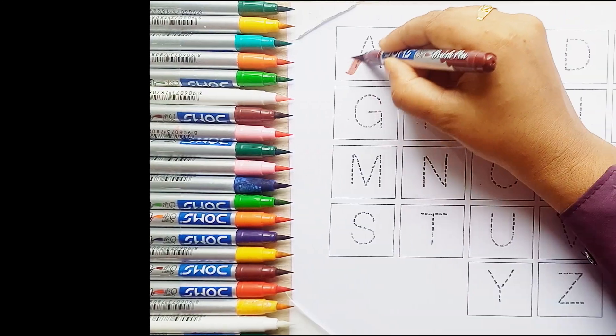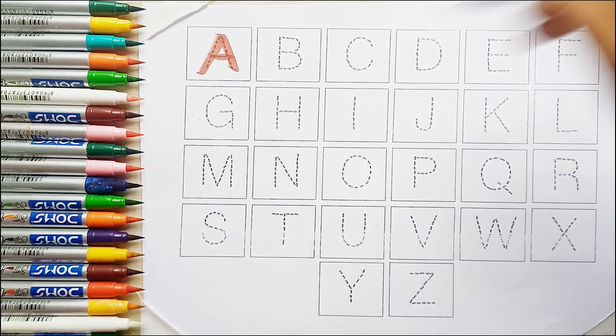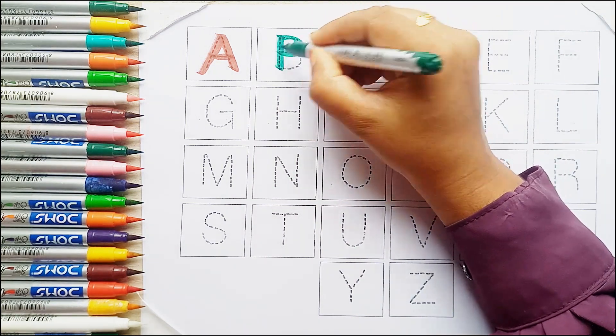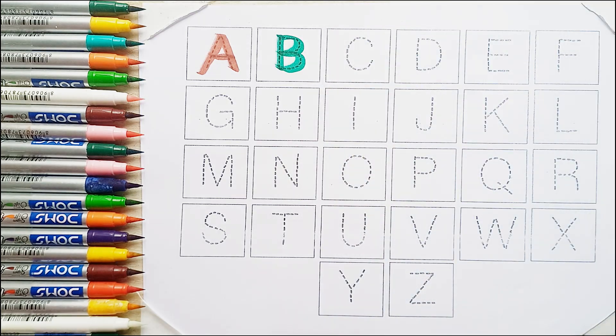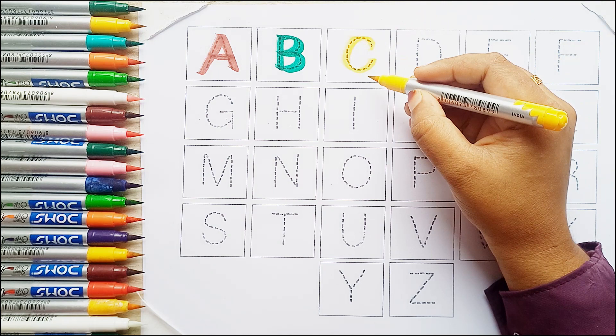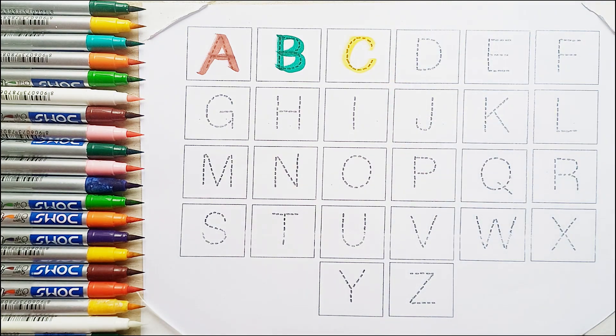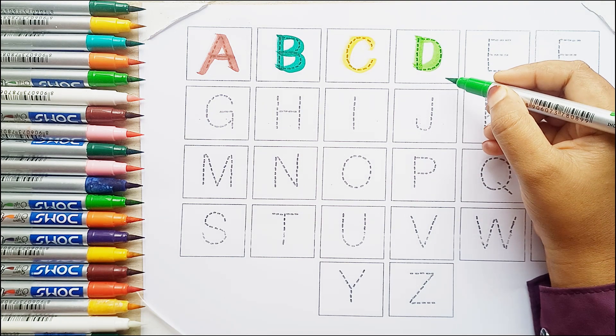Brown color, A for ant. Green color, B for ball. Yellow color, C for candy. Light green color, D for dolphin.